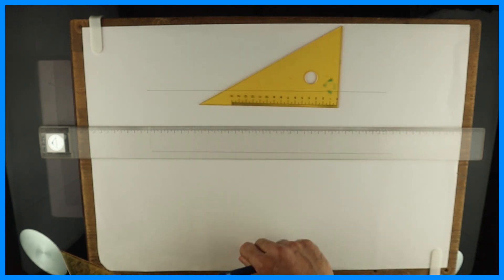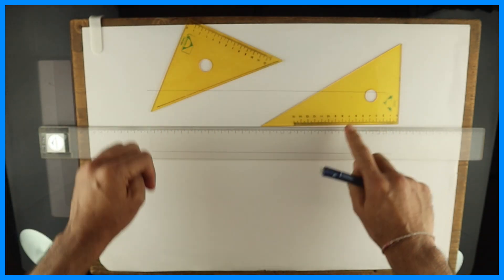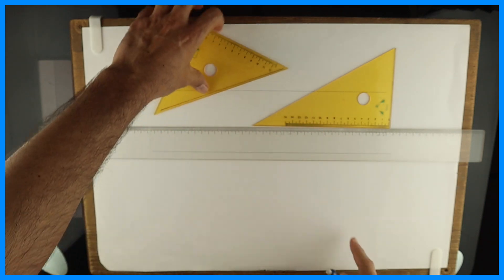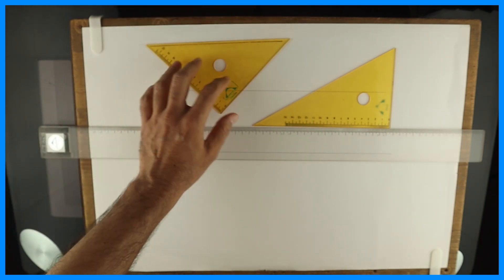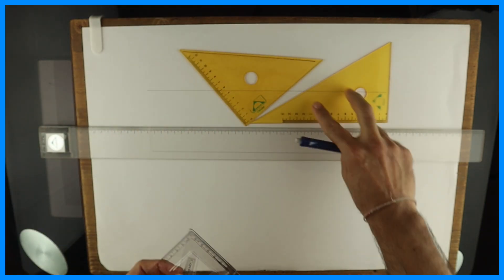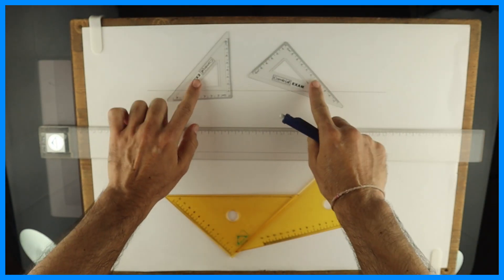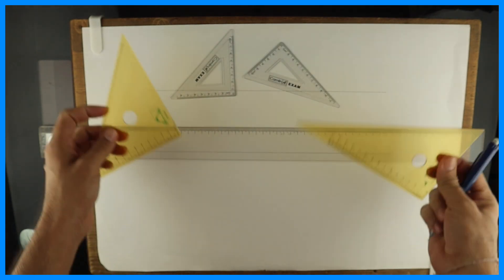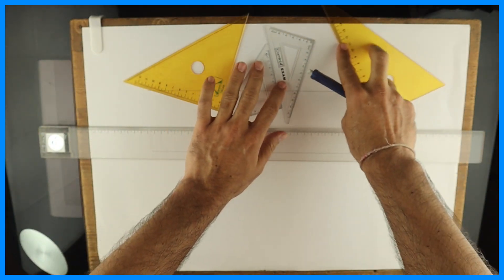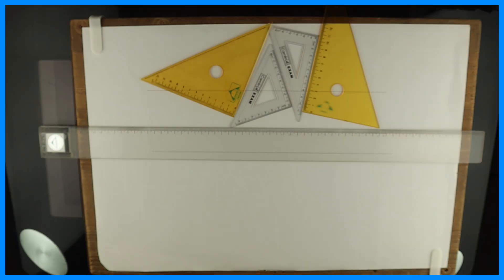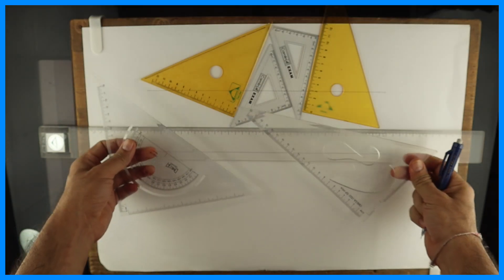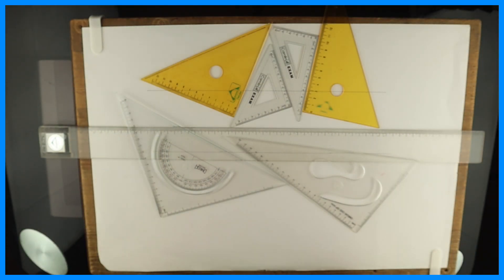This is a set square. This is another one. This one is 30-60, the other is 45-45. See this. This is what we have used in our school, like you know in school compass box - very small. That is also set square. This is also set square. Now we have, right now I have four types.